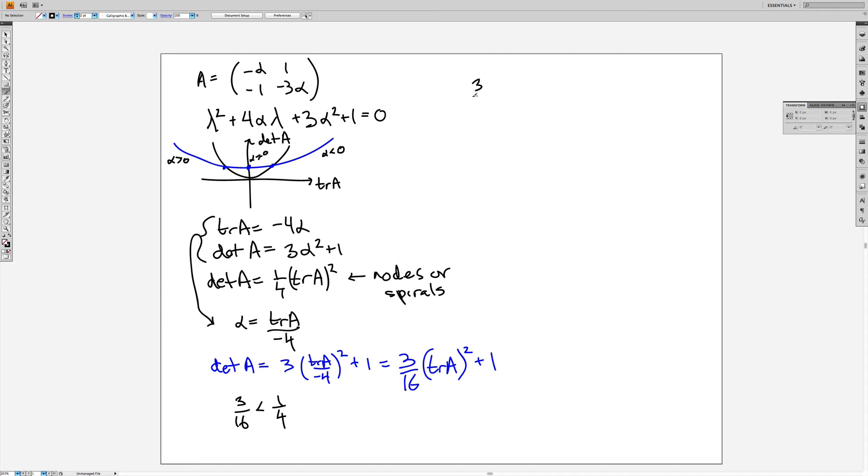We set 3 over 16 trace squared plus 1 equal to 1 over 4 trace squared. And that will tell me where the two parabolas cross. So if I bring this over to this side, I get 1 over 16 trace squared. And that's equal to 1. So that means that trace squared is equal to 16. So the trace is equal to plus or minus 4 at those transitions when I cross the parabola, the spiral node parabola. And that means that the trace of A is equal to minus 4 alpha and that's equal to plus or minus 4. So that means alpha is equal to plus or minus 1 at those transitions.